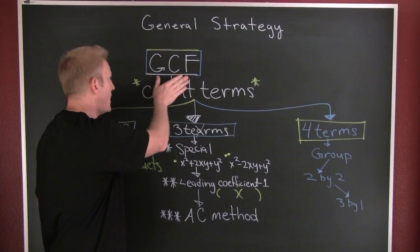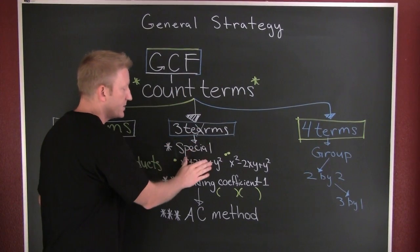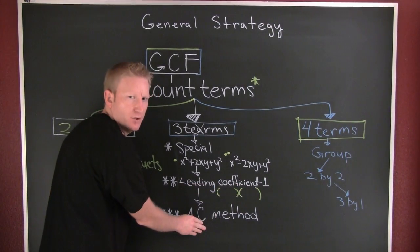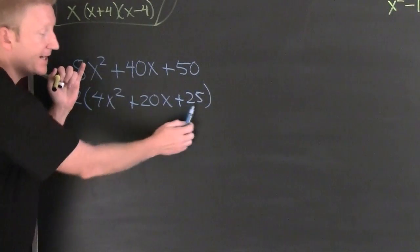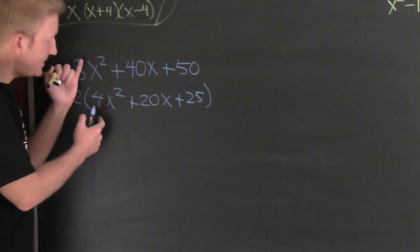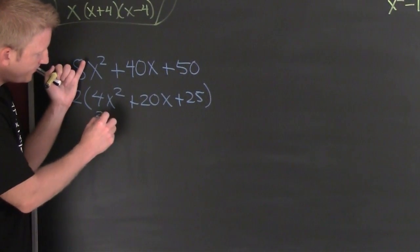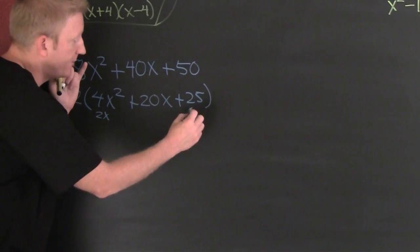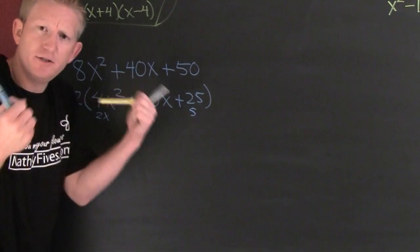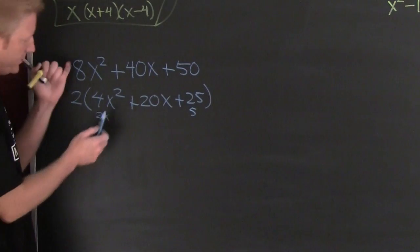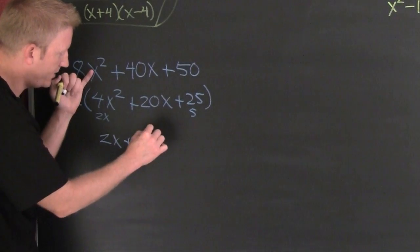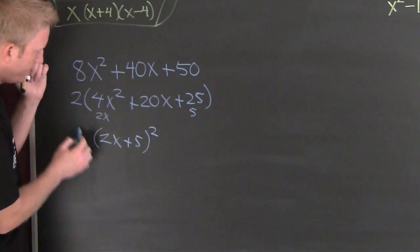Three terms remaining. Try to get on the cheap and easy — is this a perfect square trinomial? Is 4x² the square of 2x? Yes. Is 25 the square of 5? Yes. Take those two, multiply them and double it: 2 × 2x × 5 = 20x. Yes! It's a perfect square trinomial, so this factors as (2x + 5)². Bring that 2 out front.